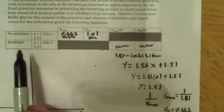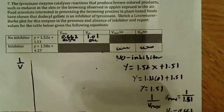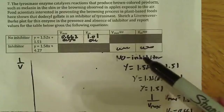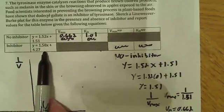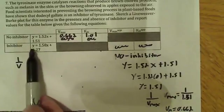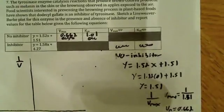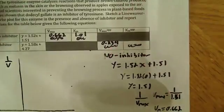Now they want us to also find those same values for the inhibitor, or when inhibitor is added. I'm not going to do the whole algebraic calculation over here. I'm just going to say what the Vmax is. Now remember to get the Vmax, we have to do 1 divided by, now if we look at the equation here, it's 1.58x plus 4.27. So if we set x equal to 0, the y-intercept is 4.27. If I do 1 divided by 4.27, I end up with 0.234.